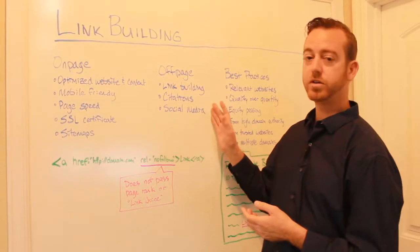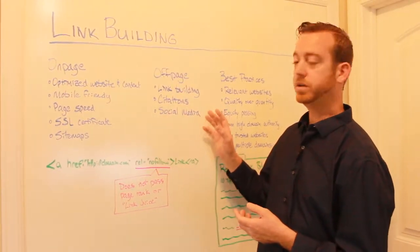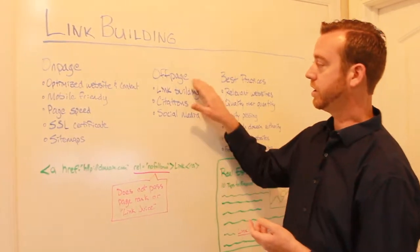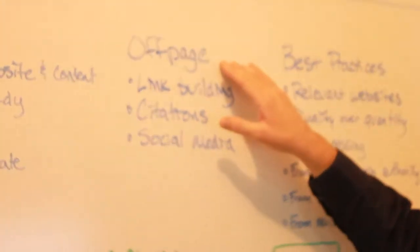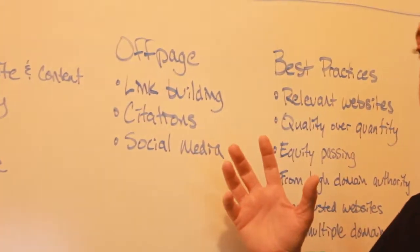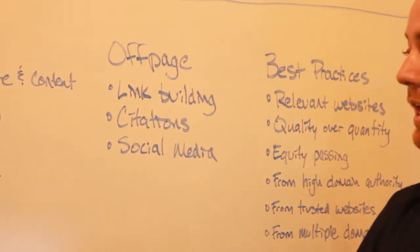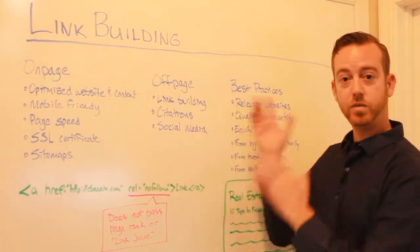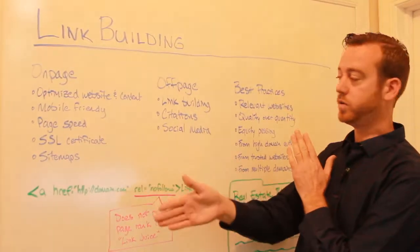And so there's other SEO strategies you can do to build trust, authority, and those are often called off-page strategies. And it's things you are not controlled on the website. Things like link building, and that's where basically another website is linking over to your website.